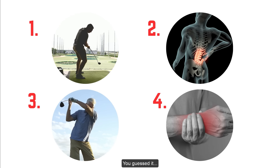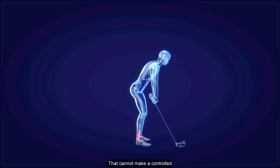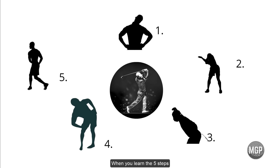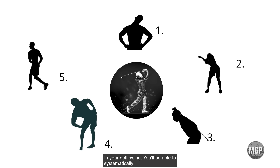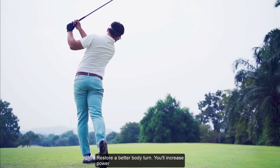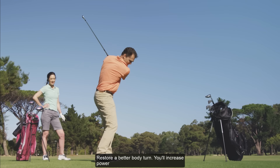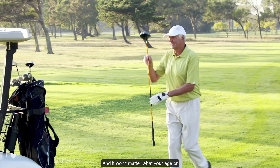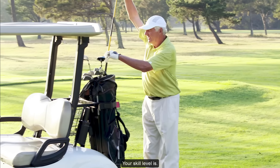It happened the exact same way that it happens to every golfer that cannot make a controlled power move safely and consistently. When you learn the five steps to build the controlled power move in your golf swing, you will be able to systematically restore a better body turn, increase power, distance, and accuracy — and it won't matter what your age or your skill level is.